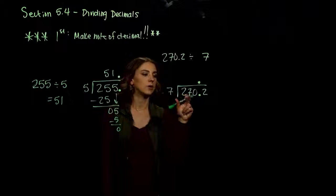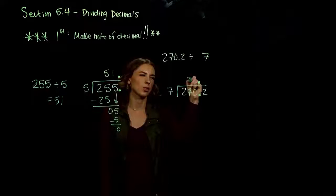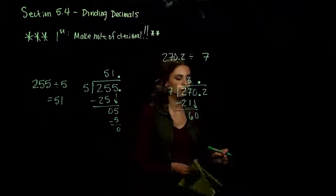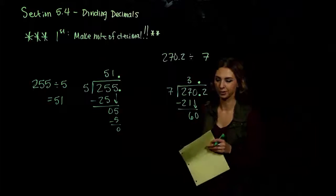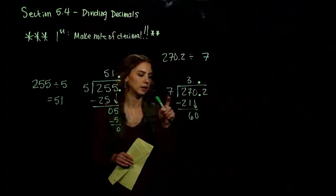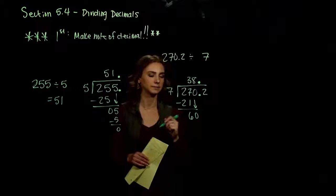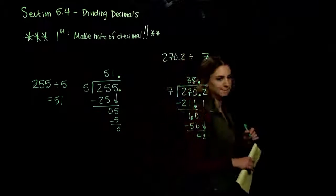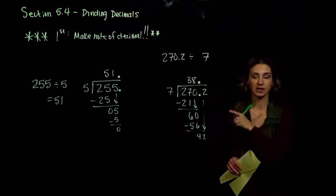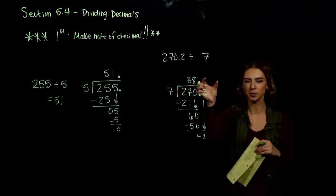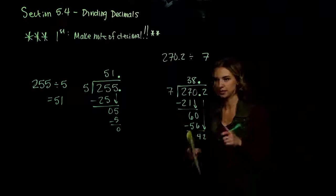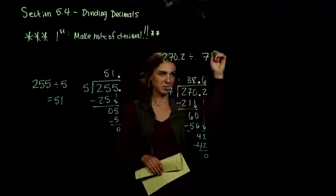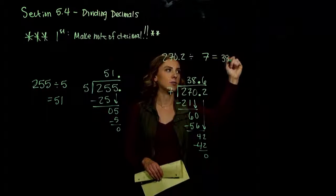7 doesn't go into 2, but 7 can go into 27. How many times without going over? 3. 7 times 3 is 21, a difference of 6. Bringing down what's next, 7 goes into 60 — 7 times 8 is 56, so 8 times 7 gives us 56, a difference of 4. Bringing down what's next, we can see where our decimal point is. 7 into 42 goes 6 times exactly, difference of zero. So when we take 270.2 and divide it by 7, we get 38.6.